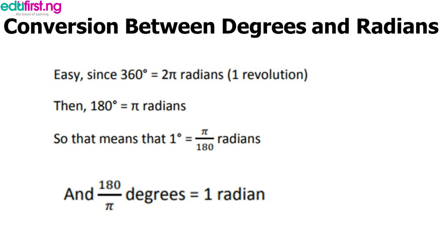In radians, one revolution equals two pi. So 360 degrees equals two pi radians. Pi is approximately 3.142, because it is 22 over 7 — the pi we commonly use in mensuration.